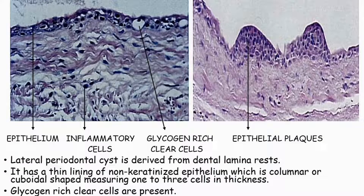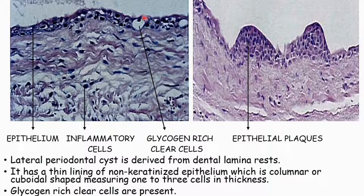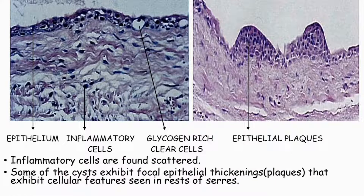The lateral periodontal cyst is derived from rests of the dental lamina. It has a thin lining of non-keratinized epithelium, which is columnar or cuboidal in shape, measuring one to three cells in thickness. Glycogen-rich clear cells are interspersed between these epithelial cells, and inflammatory cells are found scattered throughout.